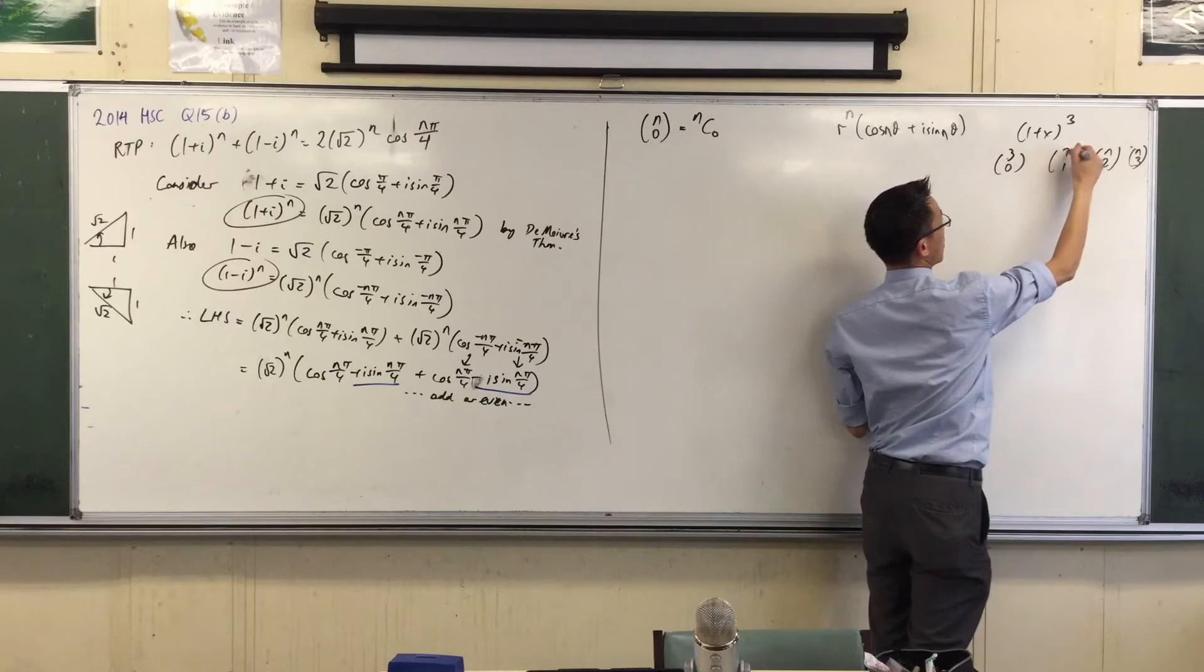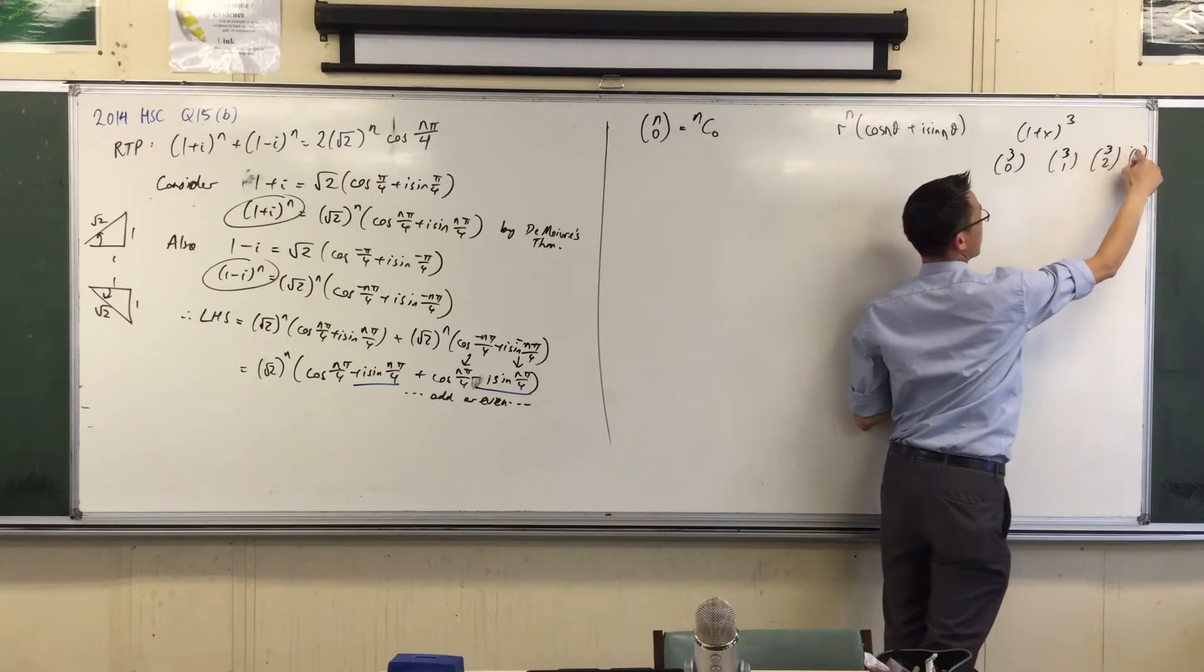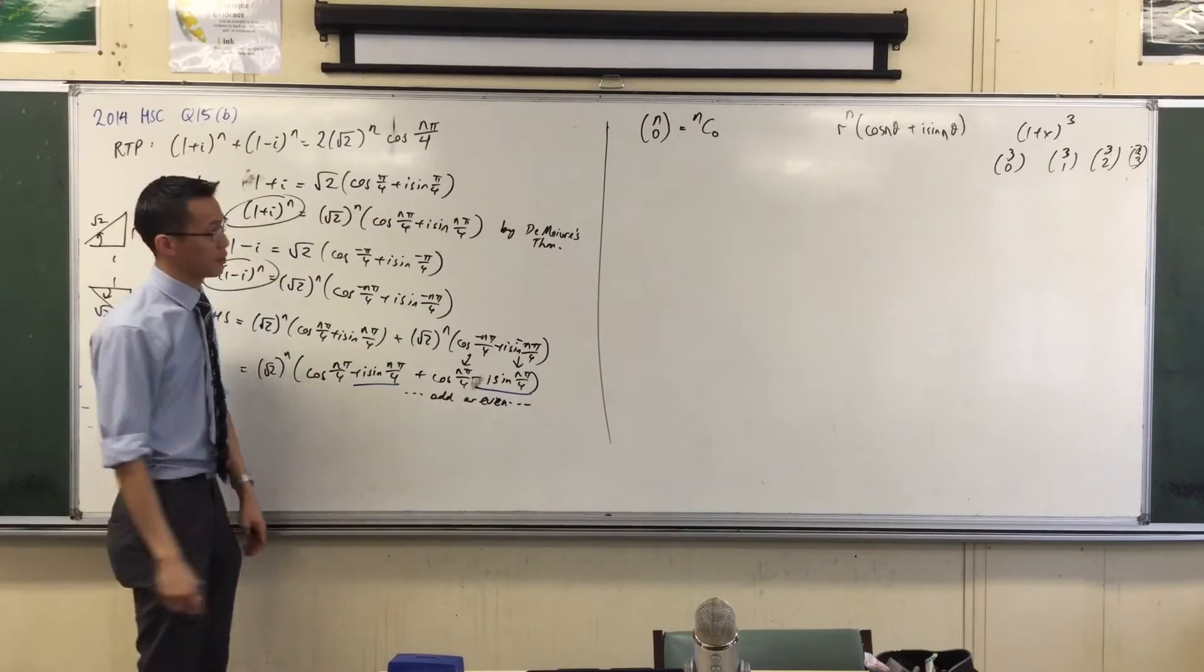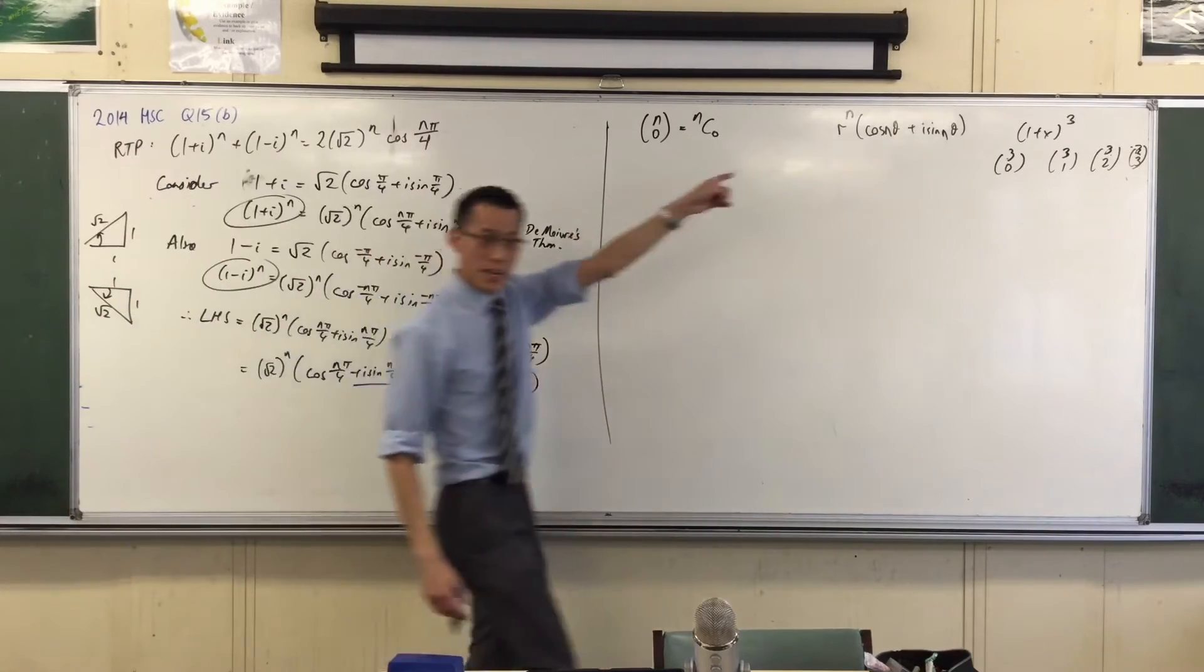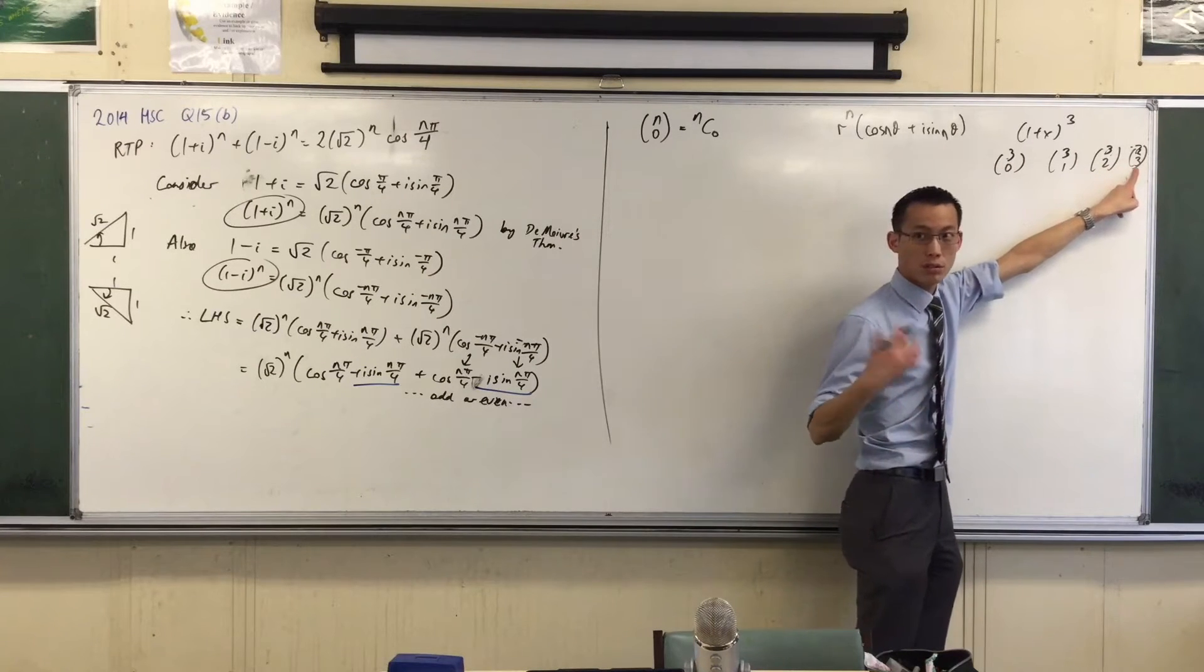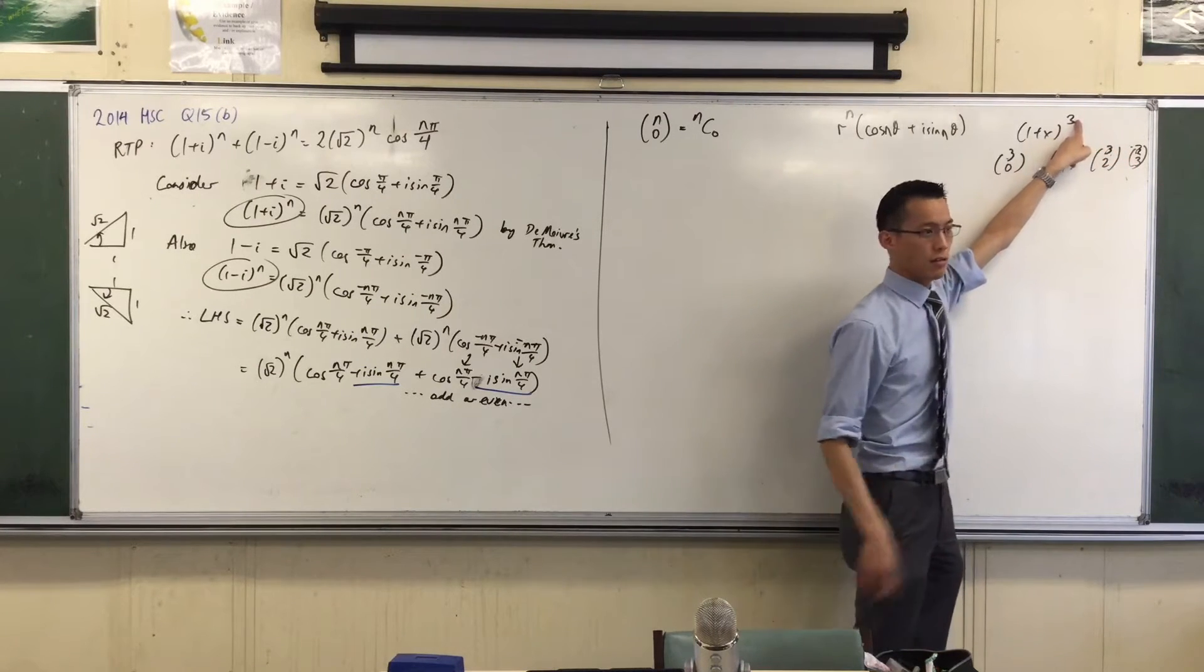3, 3, 3, 3. Because, of course, you can't have 3c4. How can you choose 4 objects out of 3 things? We have 3s all the way at the top and 3 at the end because the power is 3, power is 3.